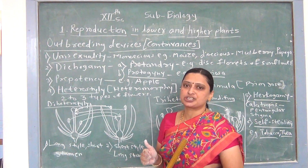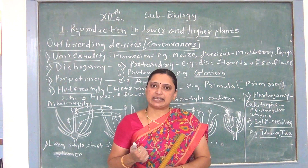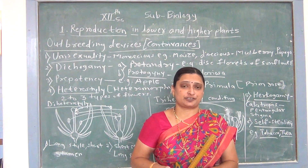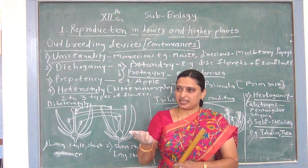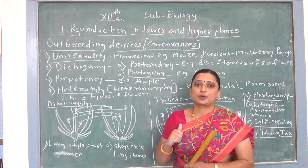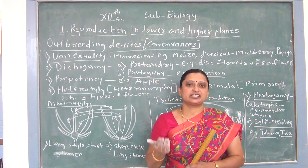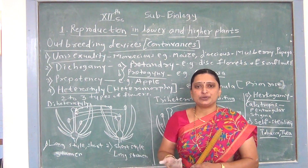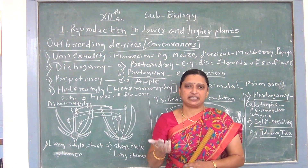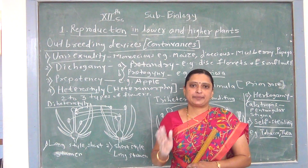In the case of self-pollination, hybrid varieties are not formed and such varieties are susceptible to diseases — they are not resistant to diseases. Therefore, in the case of cross-pollination, the progenies are not weaker, they are not susceptible to diseases, and hybrid varieties are formed. Continuous self-pollination leads to inbreeding depression in the progeny. Therefore, cross-pollination is better for producing hybrid varieties.